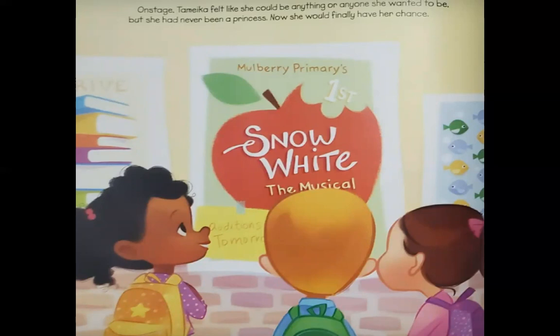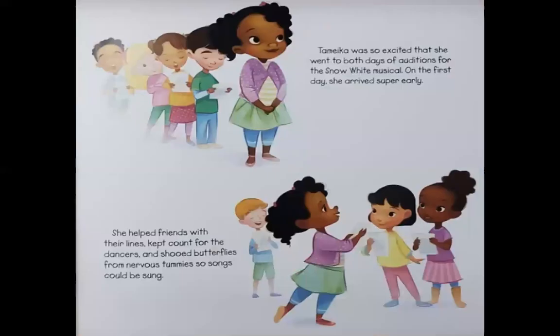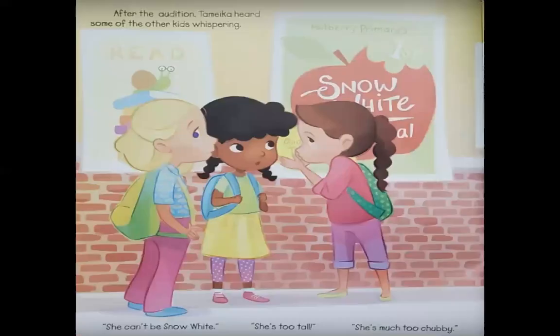And what do we see there? A big poster advertising for Snow White the Musical. Now remember, we're paying attention not just to the characters but to the setting — think about where this story is taking place. Tamika was so excited that she went to both days of auditions for the Snow White musical. On the first day, she arrived super early. She helped friends with their lines, kept count for the dancers, and shooed butterflies from nervous tummies so songs could be sung.